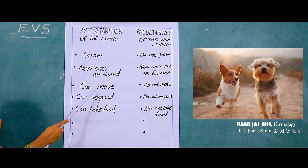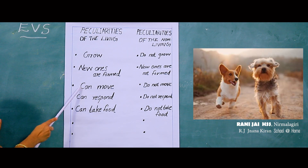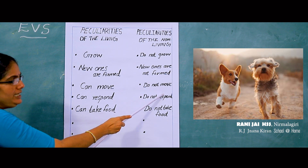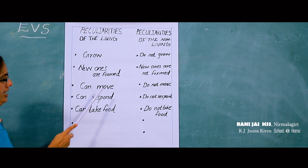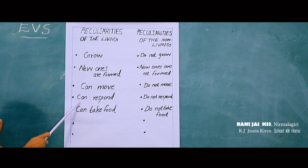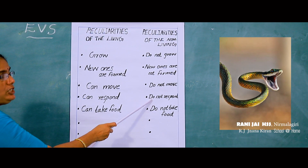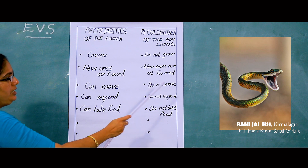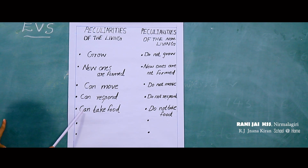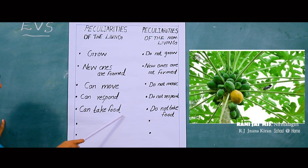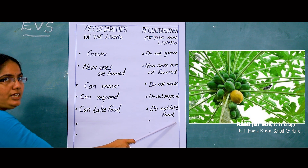Next peculiarity: living things can move, but non-living things do not move. Next: living things can respond, but non-living things do not respond. Next: living things can take food — all living things need food for growth. But non-living things do not take food.